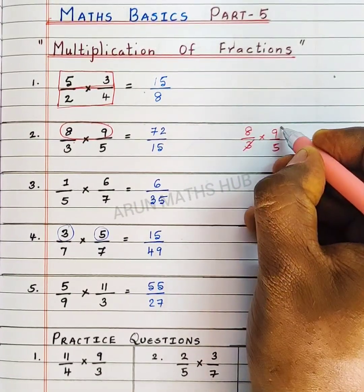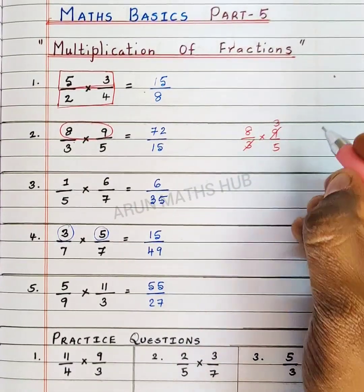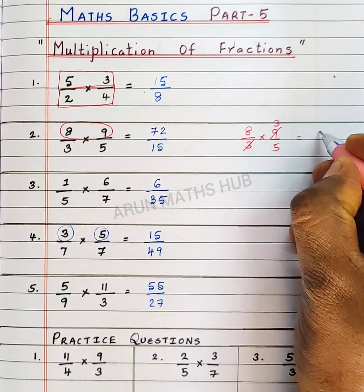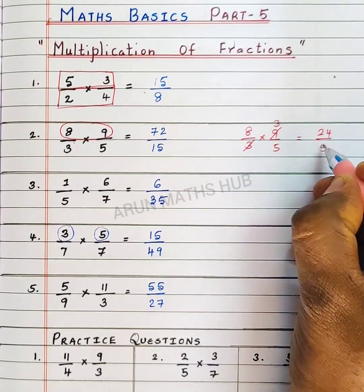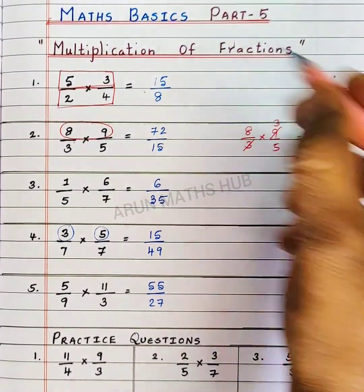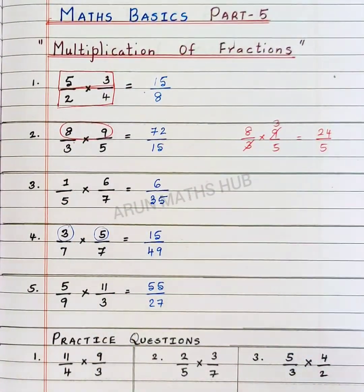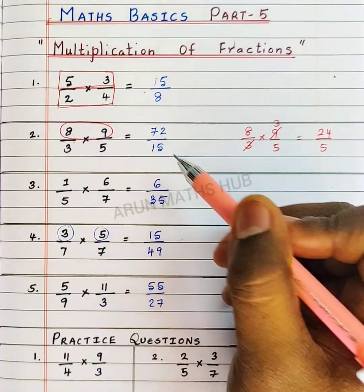3 1s are 3. Now, 8 3s are 24 divided by 1 5s are 5. So, this is the simplified form. You can simplify and you can multiply or you can multiply and you can simplify.